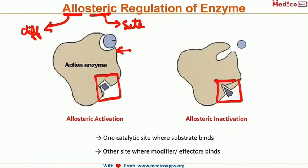There are two kinds of activity which can happen at the Allosteric site. One is Allosteric Activation. Once the activator gets attached to the Allosteric site, it will bring out conformational changes even on the active site so that the substrate can bind more efficiently, and the rate of the reaction will increase.